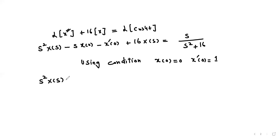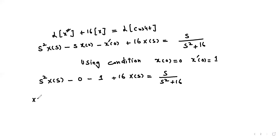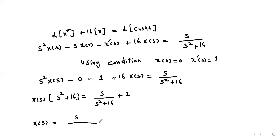Substituting the conditions, we get: s²·X(s) − 0 − 1 + 16·X(s) = s / (s² + 16), which gives s²·X(s) + 16·X(s) = s / (s² + 16) + 1. Taking X(s) as a common factor: X(s)·(s² + 16) = s / (s² + 16) + 1 = (s + s² + 16) / (s² + 16). Therefore X(s) = (s + s² + 16) / (s² + 16)².